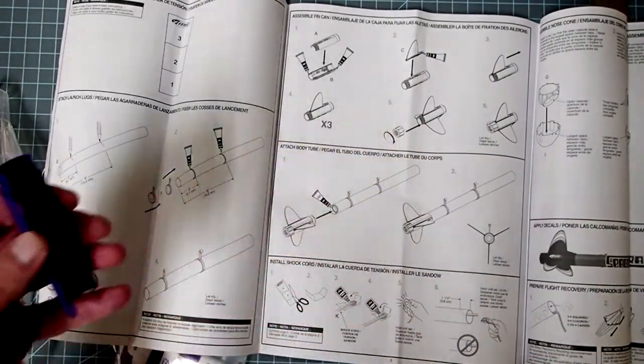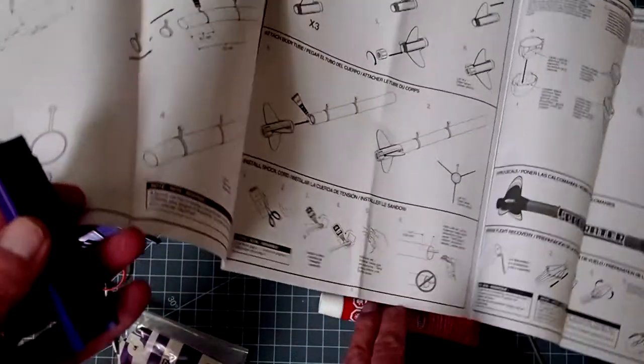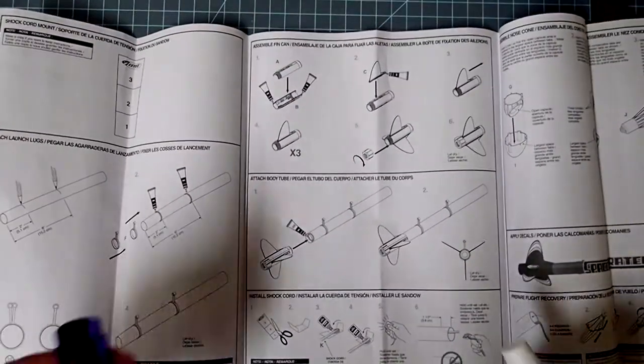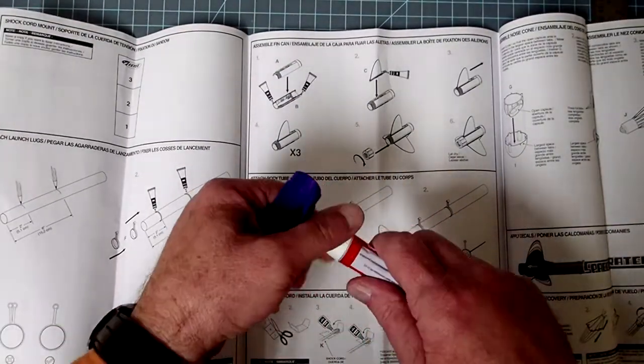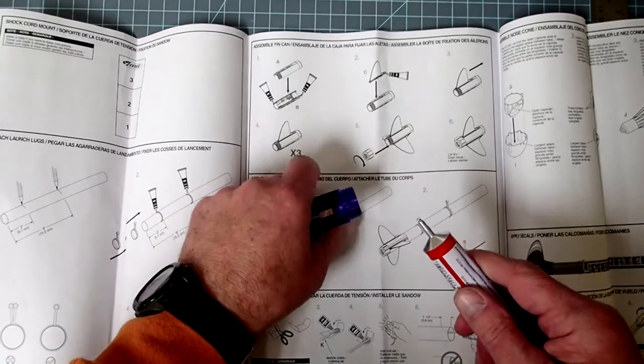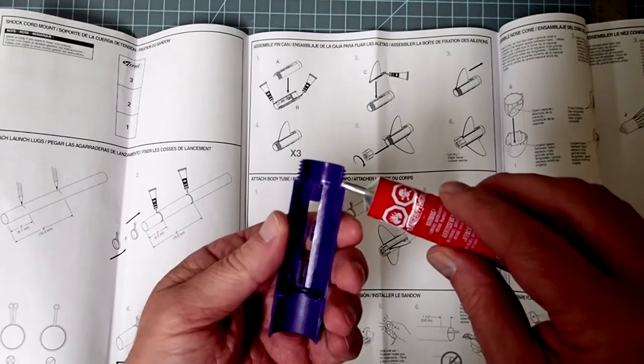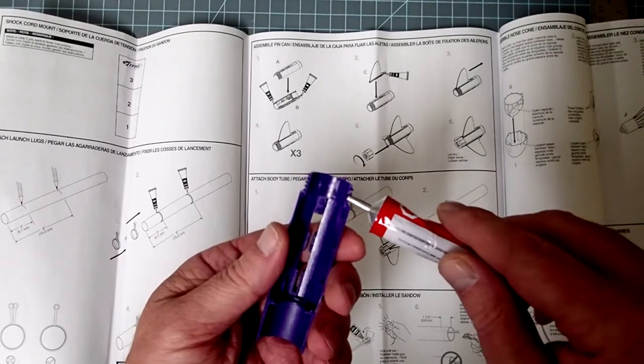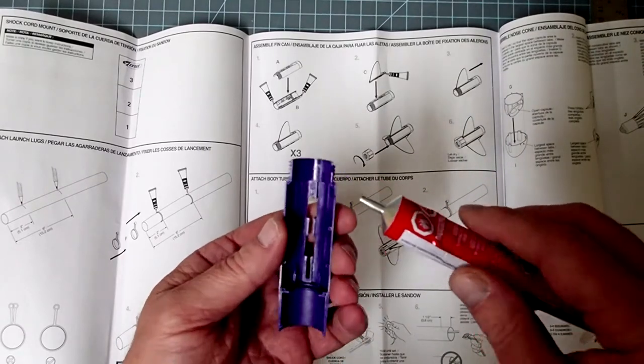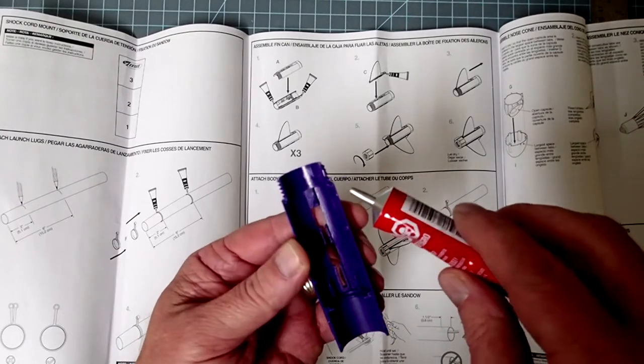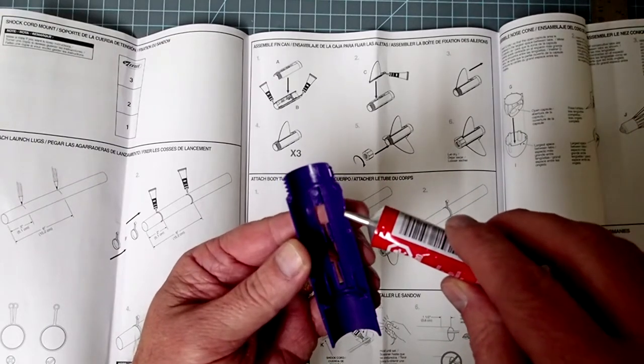All right, so the first thing I'm going to do then is find where I buried my glue. Okay, and it's a little bit runny there. There we go. And I'm just going to run a very thin bead here. Be especially careful on those threads because we don't want to gum those up.